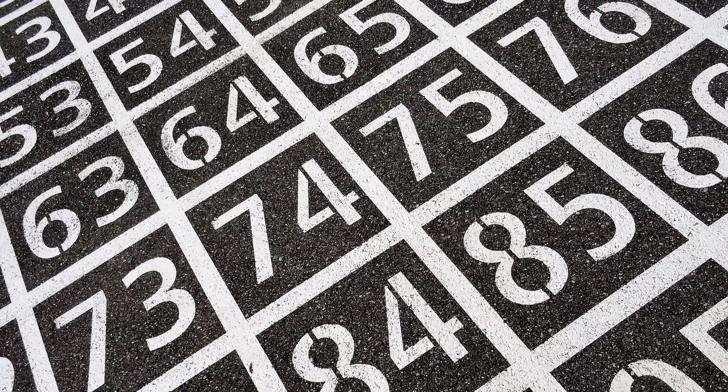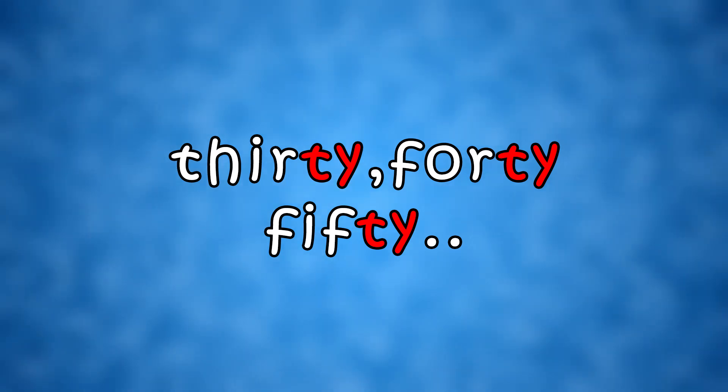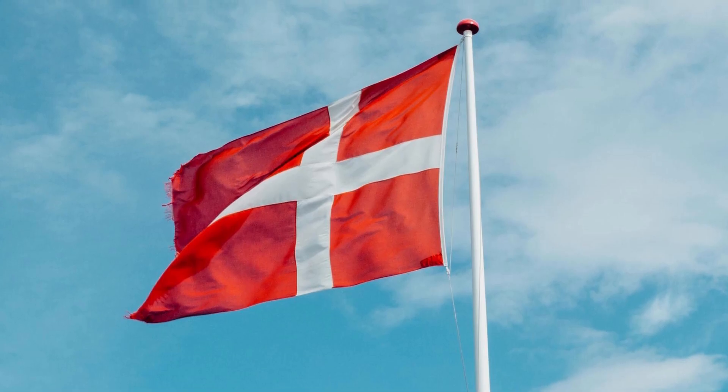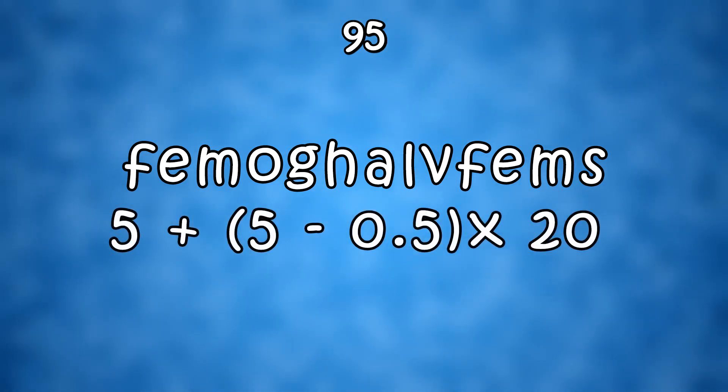The same goes for other numbers like 30, 40, or 50. But then we have Danish, where 95 is literally 5 plus 5 minus 0.5 times 20.